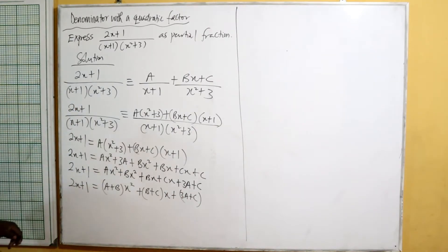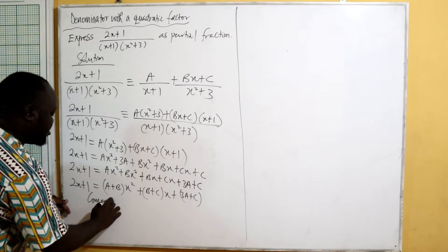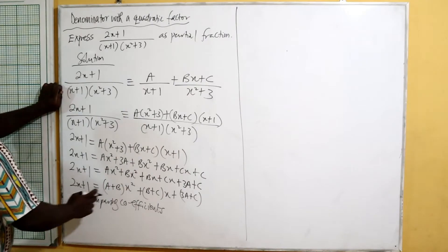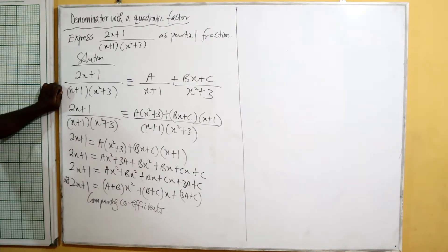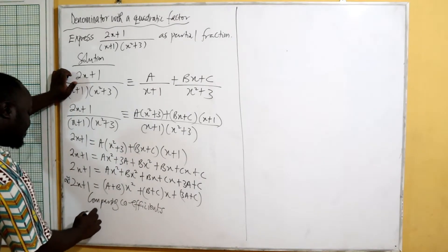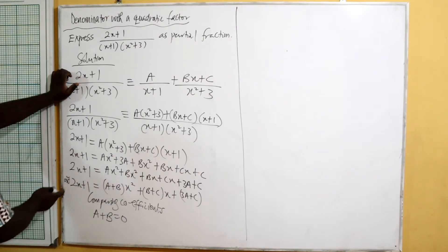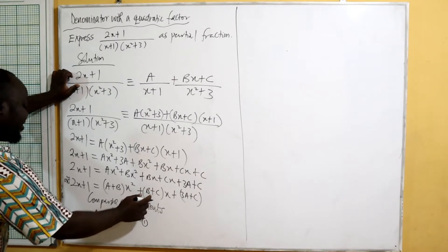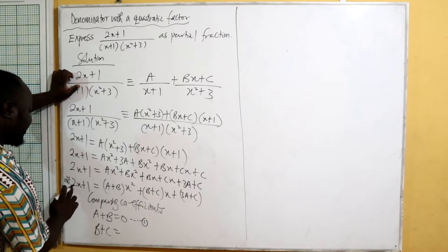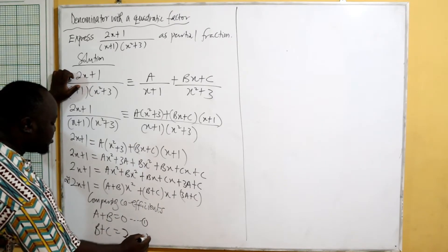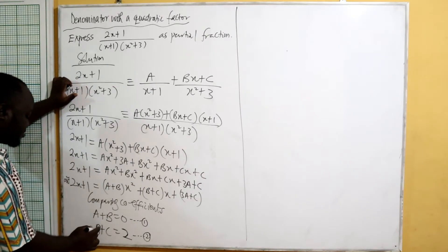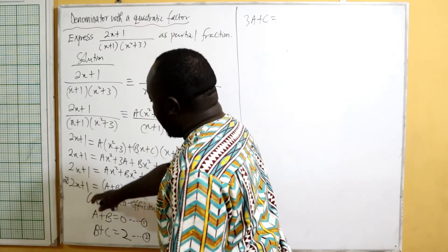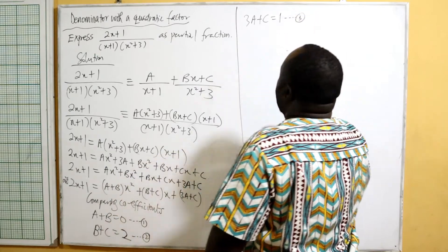Comparing coefficients: the left side has zero x squared, so equation one is a plus b equals zero. The coefficient of x on the left is two, so equation two is b plus c equals two. The constant on the left is one, so equation three is 3a plus c equals one.